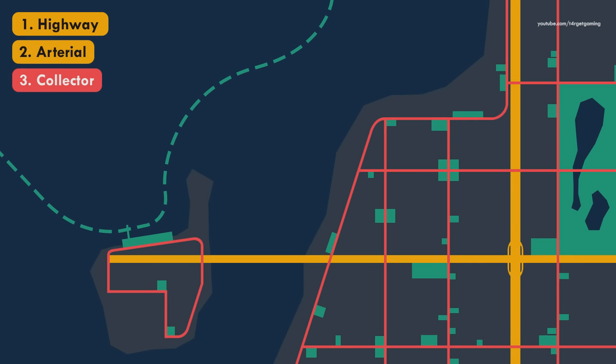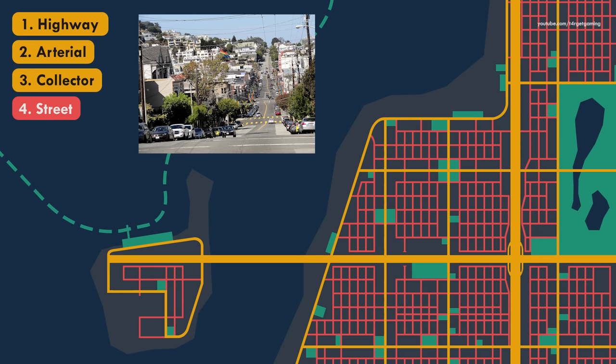Finally, we have the local roads, or streets. These are the roads that encompass most residential areas and smaller local shops. They're commonly accompanied by driveways on the side where people park their cars right in front of their houses — that's an easy way to identify them.